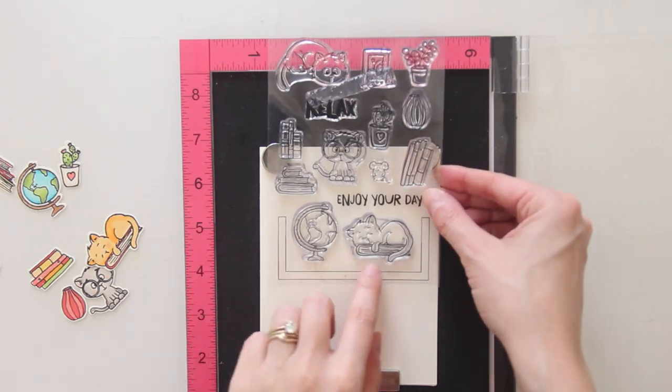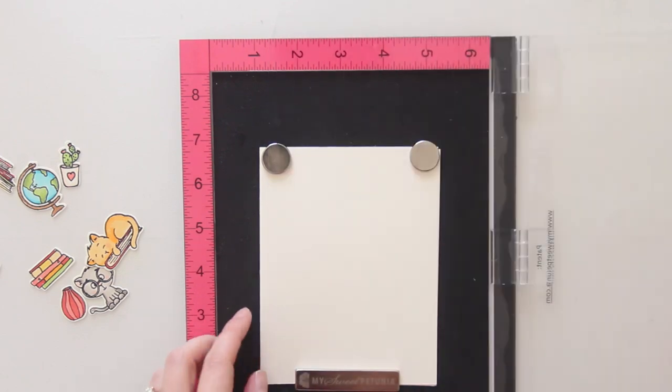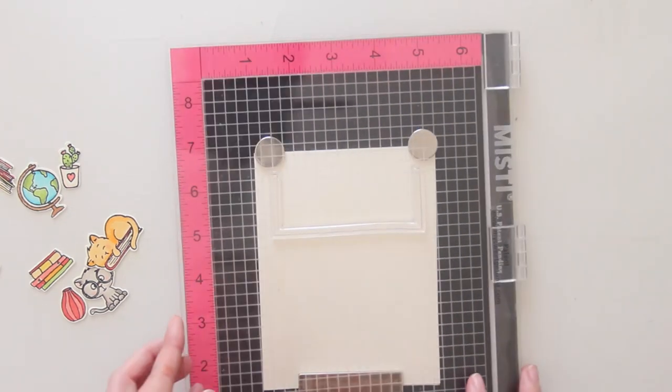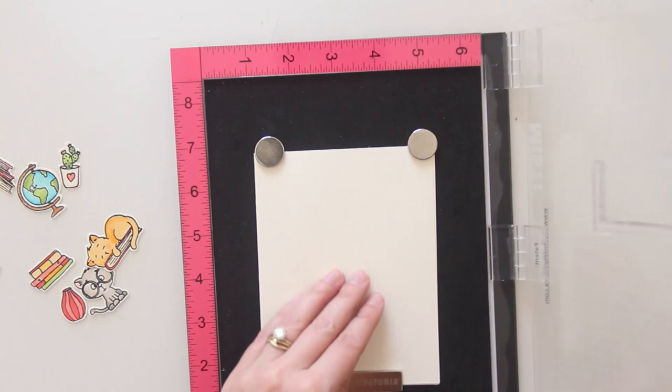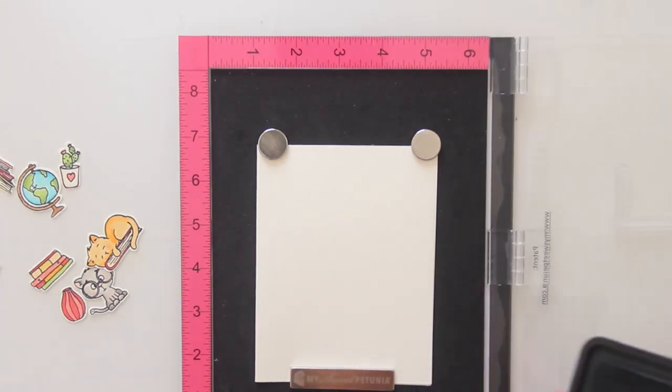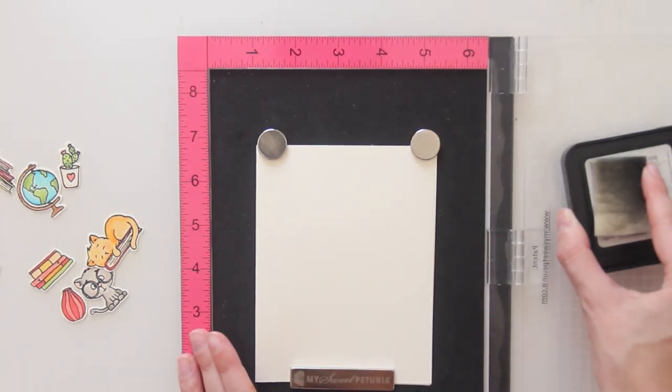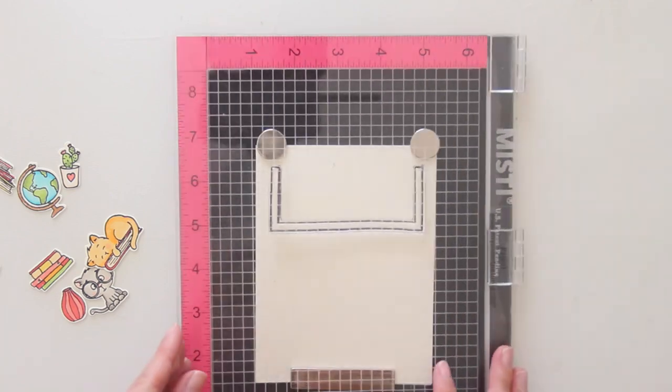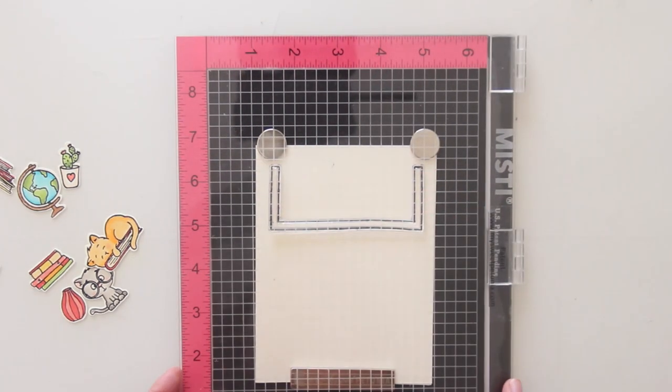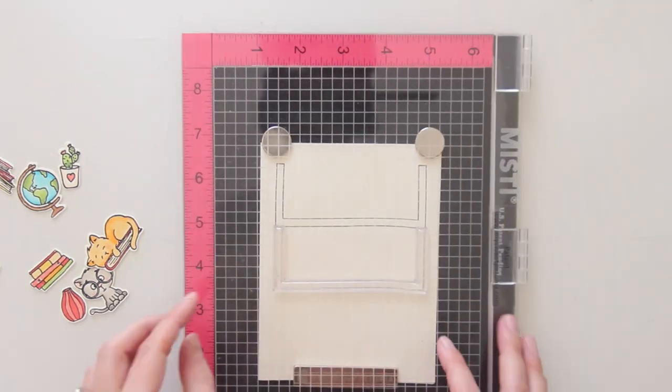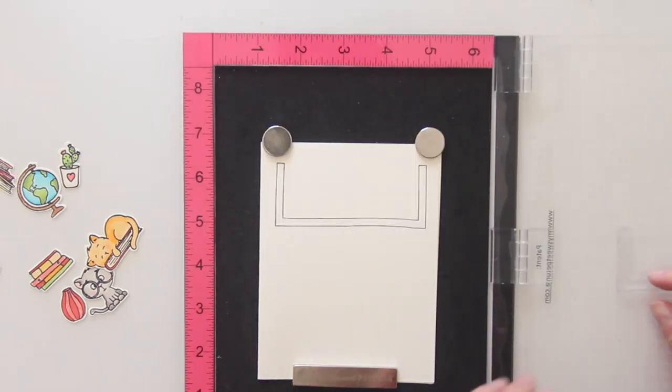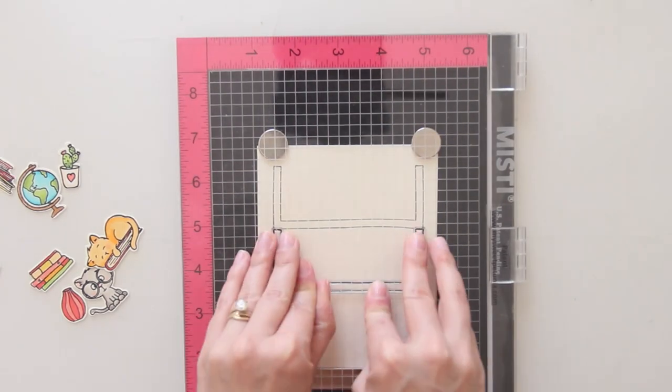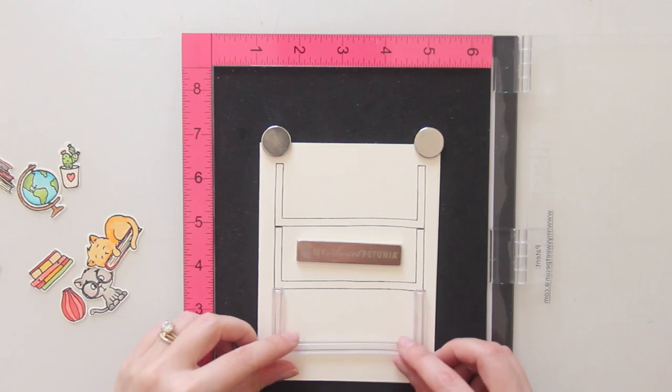Now that all of my pieces are colored, I'm going to take the actual stamp in the set that creates the bookshelf shelves, and I'm going to use my MISTI for this because I want to line it up perfectly on my card base. Taking that same black ink and then lining it up directly below the first stamp, and then just repeating that one more time so I have a three-tiered bookshelf.